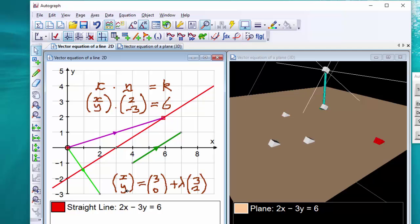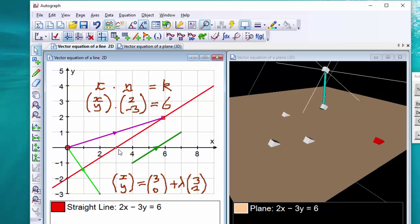Now, the other form is x, y is the general point on the line. 3, 0, I've just chosen a point here as 3, 0, plus lambda times this vector, which represents the direction of the line. 3 along and 2 up.